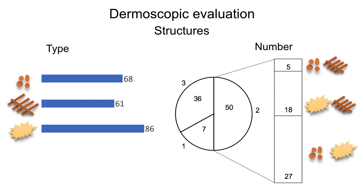When presenting two patterns, in the majority of cases we observed structureless areas with clods, or structureless areas with lines and network. This means that the predominance of these lesions was characterized by structureless areas.